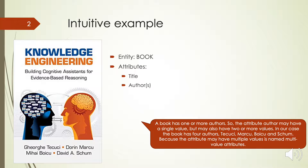A book has one or more authors, so the attribute author may have a single value, but may also have two or more values. In our case, the book has four authors: Tekuj, Marko, Boicu, and Sham. Because the attribute may have multiple values, it is named a multi-value attribute.